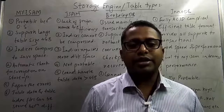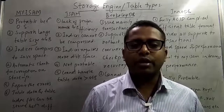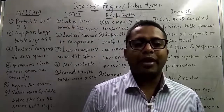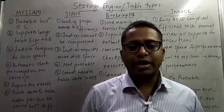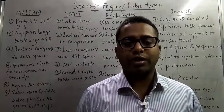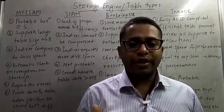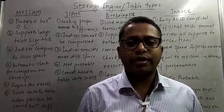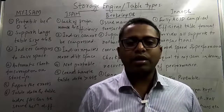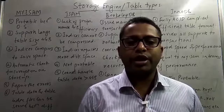Each database engine has its own advantages and disadvantages. There are about four to five types of database engines available in MySQL server, and based on the advantages and features, we make use of any of the database engine while creating the database. While creating the table, we define the fields, their data types, primary key, foreign key, indexes, and default values — and at that time we also need to define the type of database engine to use for that table.